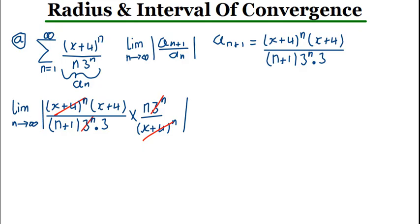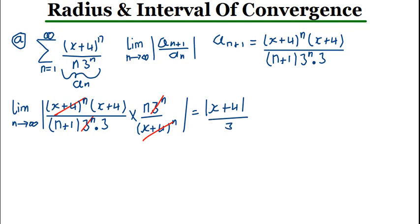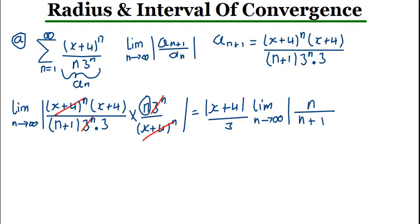After cancellation, we can take the X and the 3 outside the limit. The expression becomes X plus 4 divided by 3, multiplied by the limit as N approaches infinity of N divided by N+1. Dividing numerator and denominator by N gives 1 over 1 plus 1/N. As N approaches infinity, 1/N approaches 0, so this limit equals 1.